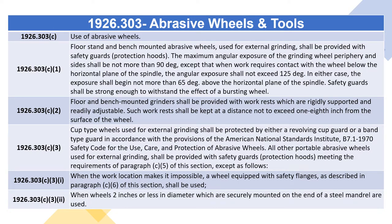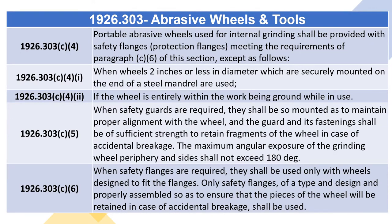1926.303(c)(3)(i): When the work location makes it impossible, a wheel equipped with safety flanges as described in paragraph (c)(6) shall be used. 1926.303(c)(4): Portable abrasive wheels used for internal grinding shall be provided with safety flanges (protection flanges) meeting the requirements of paragraph (c)(6), except: when wheels two inches or less in diameter are securely mounted on the end of a steel mandrel, or if the wheel is entirely within the work being ground while in use.